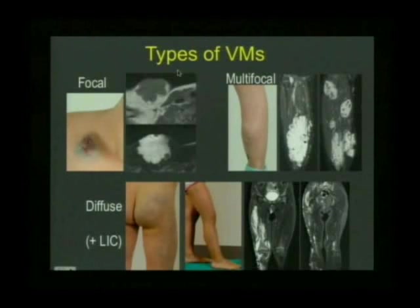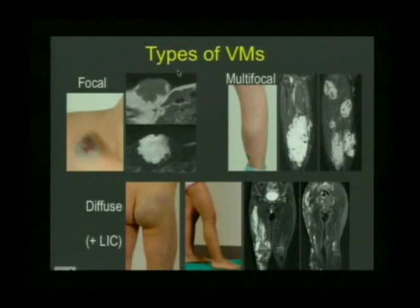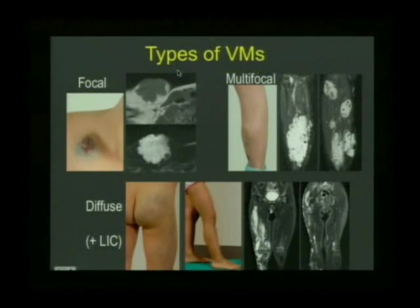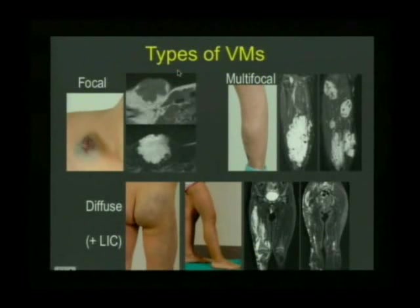There are different types of venous malformations, and we categorize them as either focal, multifocal, or diffuse. Here's a solitary venous malformation in the subcutaneous tissue — an excellent candidate for surgical excision rather than interventional radiology. This is a multifocal venous malformation with expansion to the calf, showing numerous intramuscular venous malformations with signal voids due to phleboliths.